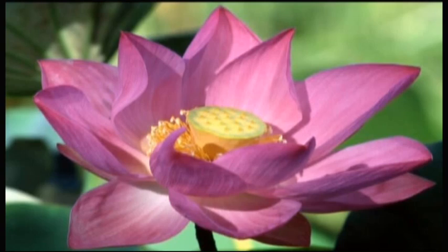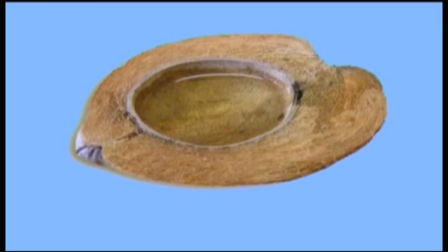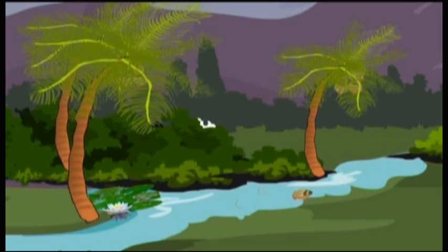For example, water lily, lotus and coconut. The coconut fruit has air trapped in between its husk. This makes it light and easy to float. Water carries these fruits and seeds to far off places.